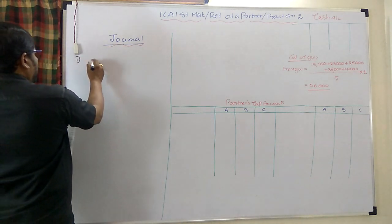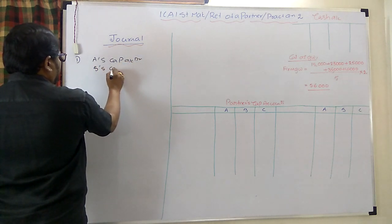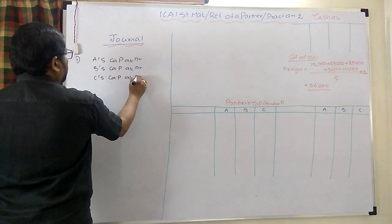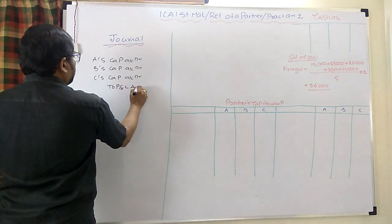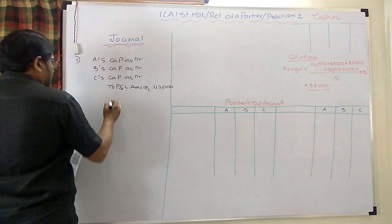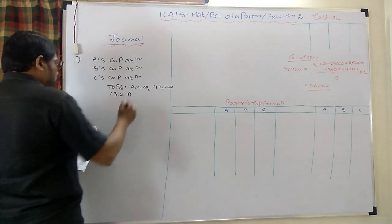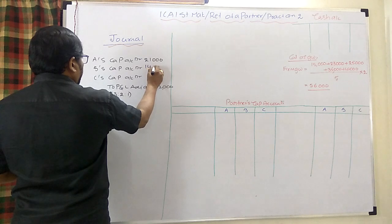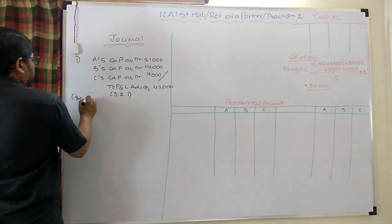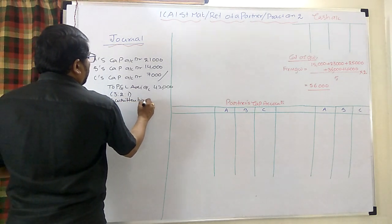First entry: A's capital account, B's capital account, C's capital account — all debit to P&L adjustment account. The profit of 42,000 is reversed in ratio 3:2:1, so A debits 21,000, B debits 14,000, and C debits 7,000. Being profit returned back by partners.